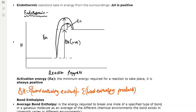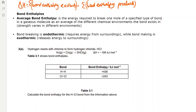Activation energy is defined as the minimum energy required for a reaction to take place, and it's important to know that it's always positive. We can calculate the enthalpy change of a reaction by subtracting the sum of the bond enthalpies of the reactants by the sum of the bond enthalpies of the products. The average bond enthalpy is the energy required to break one mole of a specified bond type in a gaseous molecule — it's an average of the different chemical environments the bond exists in, because the strength of bonds varies in different chemical environments. Note that bond breaking is endothermic because it requires energy from the surroundings, and bond making is exothermic because it releases energy to the surroundings.